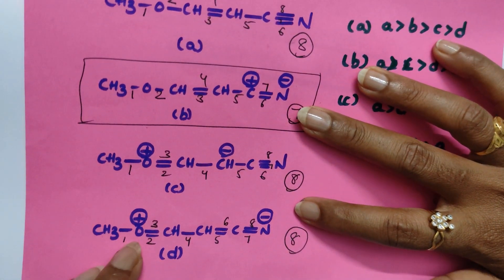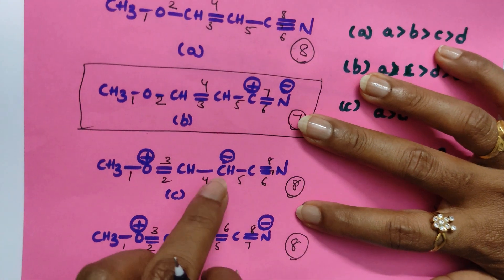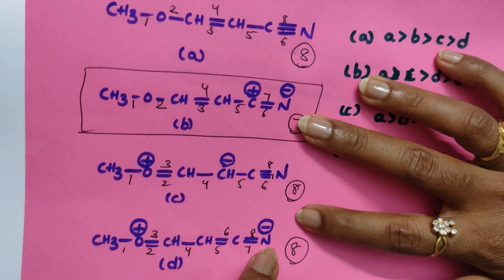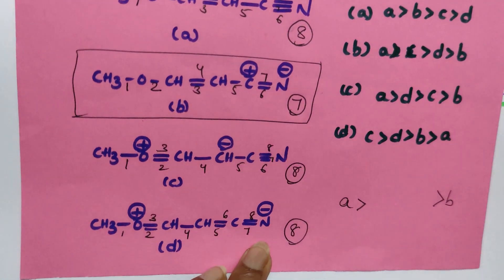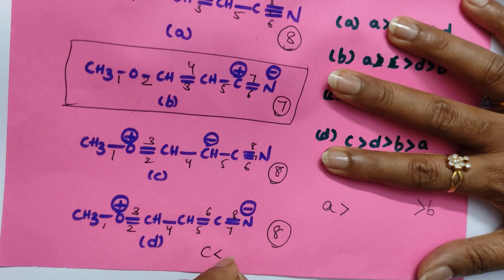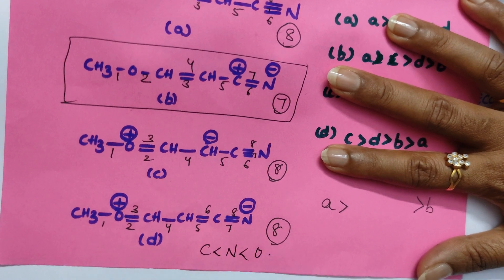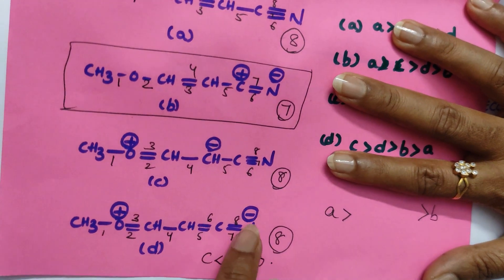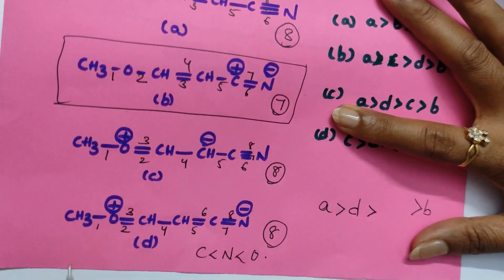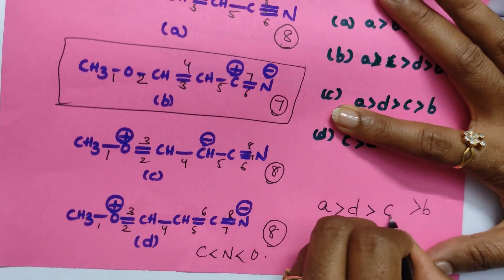So third trick you have to apply. Here oxygen is having positive, here also positive, so no difference. Now here carbon is having negative, nitrogen is having negative. Which is correct? Carbon and nitrogen, which is more electronegative? Nitrogen is more electronegative. This is the order: carbon, nitrogen, oxygen. So nitrogen is more electronegative. That is why D is the correct one.